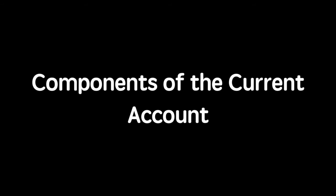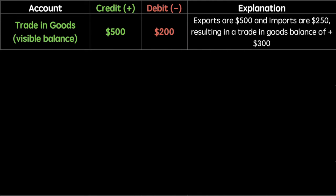Getting back to the current account, we'll now break it down into four sections and discuss each in turn. The visible balance is the balance of the trade in goods. This includes all physical goods that are exported from and imported to a country. The visible balance is calculated by subtracting imports from exports, resulting in a visible balance of $300. The term credit represents a cash inflow into the country and the debit represents a cash outflow from a country.